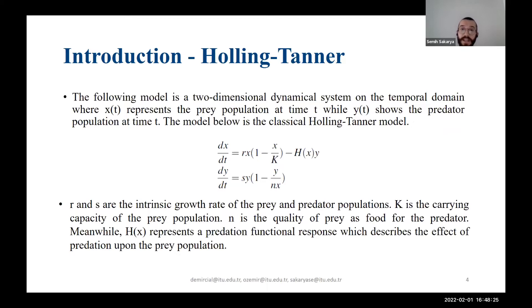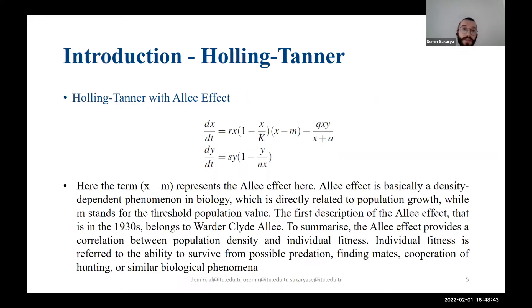You can see the two-dimensional dynamical system which is the classical Holling-Tanner model. Here x represents the prey population and y is the predator population. I should mention the Allee effect — the term x minus n in the first equation represents the Allee effects, used to explain biological phenomena such as ability of surviving or ability of finding mates.